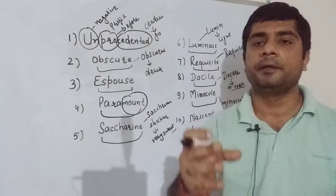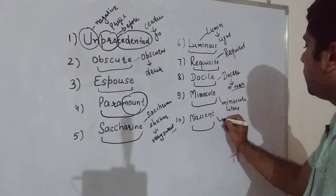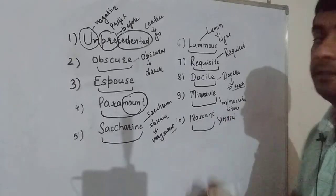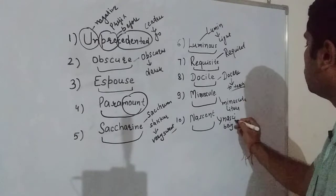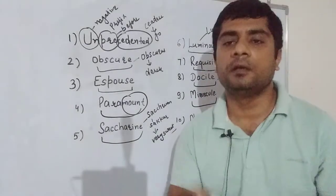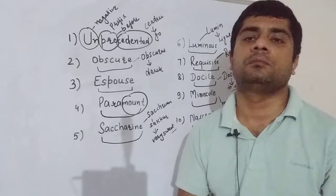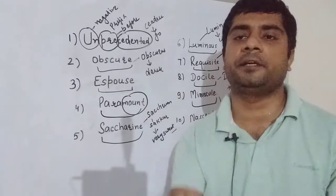Next word hai nascent. Nascent. Ye hai Latin nasci se. Latin nasci ka matlab hai to be born. Nascent kya hota hai? Jo abhi abhi paida hua, jo emerging ho, jo beginning stage mein ho. Nascent.